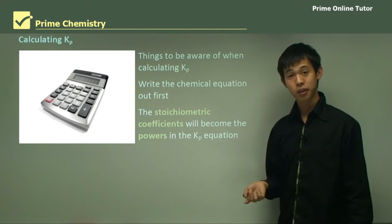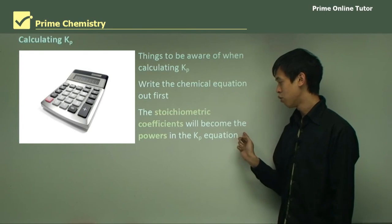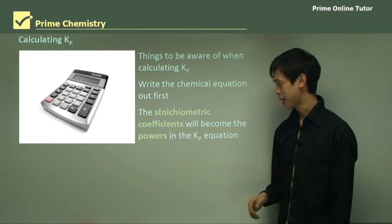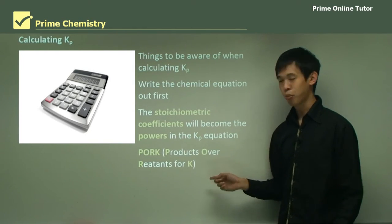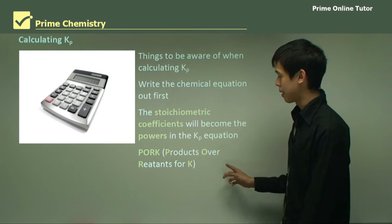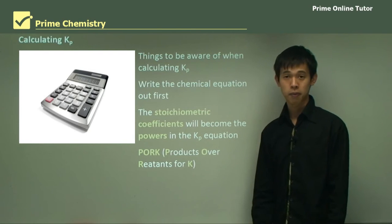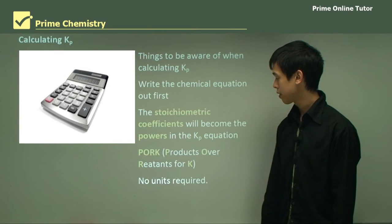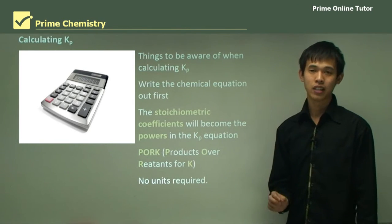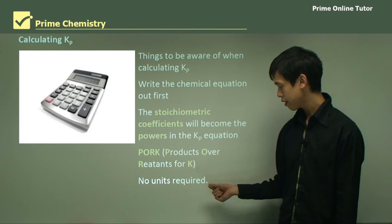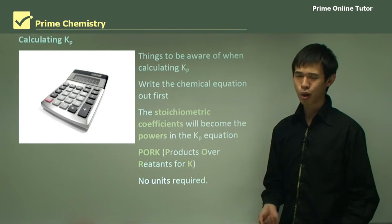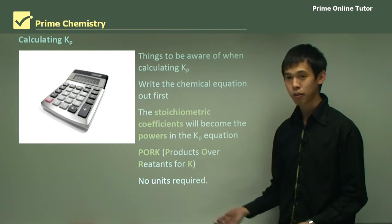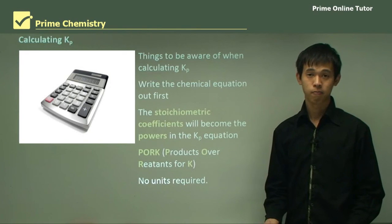Now from that chemical equation we know that the stoichiometric coefficients will become the powers in the Kp equation. And pork, remember I talked about this in the very first lesson on Kp, pork is products over reactants for k. So to get k we do products over reactants. And Kp has no value in terms of units, it's dimensionless. So we don't need any units. Similar to how moles, we don't really write moles, or you can if you really want to, but moles is technically not really a unit either. It's just a number of things.